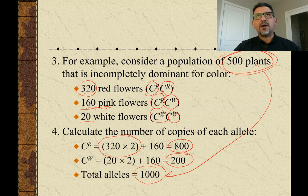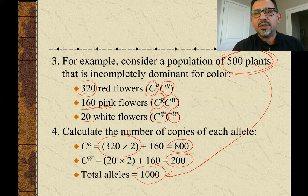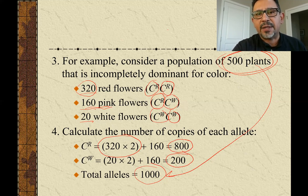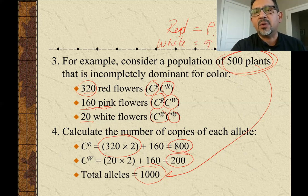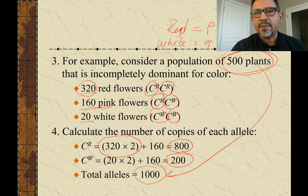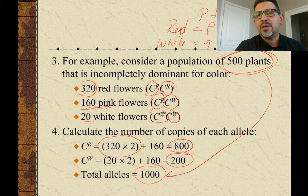As part of the Hardy-Weinberg equilibrium concept, we can come up with an equation. The sum of allele frequencies — where p represents the frequency of red alleles and q represents the frequency of white alleles — should equal 1. I'm using these letters because I'm about to form an equation dealing with allele frequencies and probabilities. The Hardy-Weinberg allele frequency equation states that p plus q equals 1.